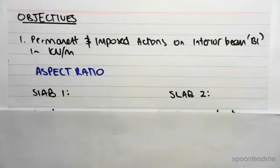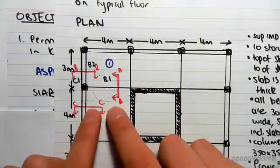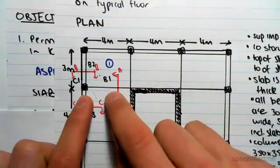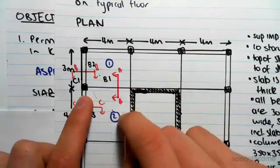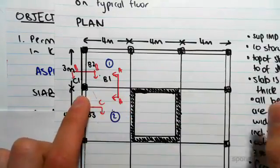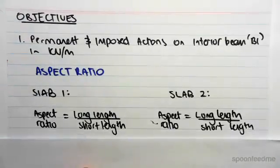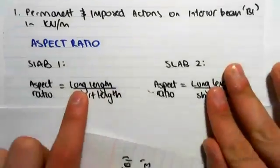So slab 1 and slab 2, so I'm going to call this one slab 1 and slab 2. Obviously B1 is going to be supporting slab 1 and slab 2. We just need to work out how much loading is going into B1. So for slab 1 and slab 2, aspect ratio is the long length over the short length.